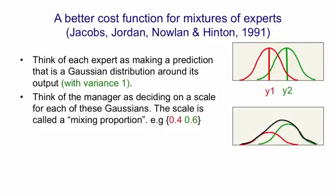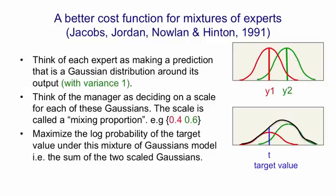The manager then decides probabilities for the two experts and those probabilities are used to scale down the Gaussians. Those probabilities have to add to one and they're called mixing proportions. And so once we've scaled down the Gaussians we get a distribution that's no longer a Gaussian, it's the sum of the scaled down red Gaussian and the scaled down green Gaussian. And that's the predictive distribution for our mixture of experts. What we want to do now is maximise the log probability of the target value under that black curve. And remember the black curve is just the sum of the red curve and the green curve.